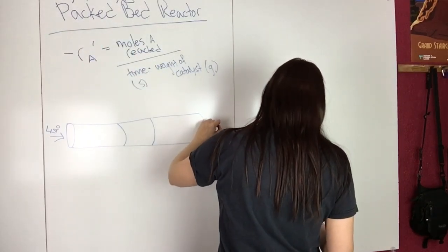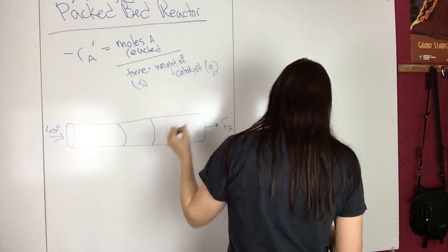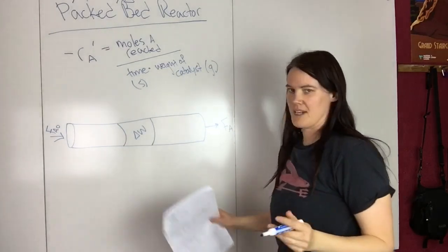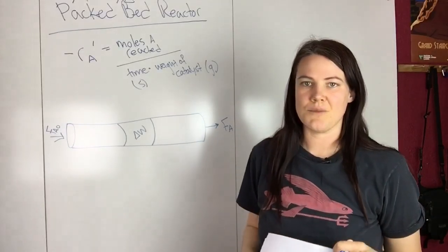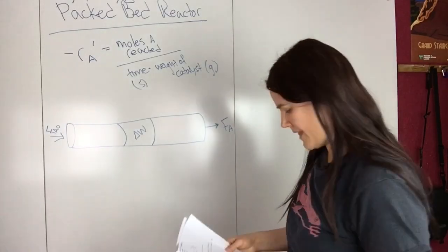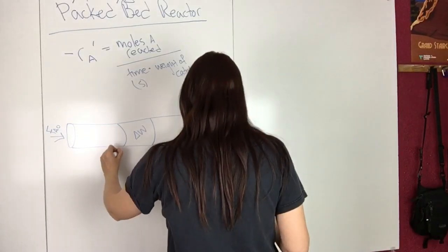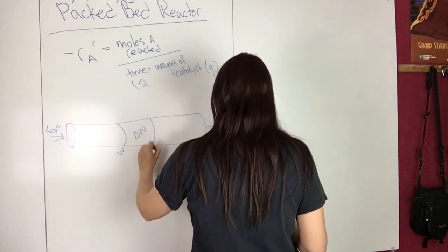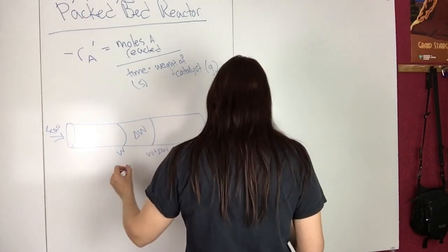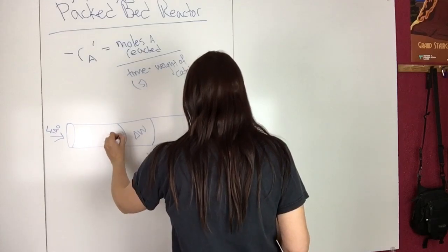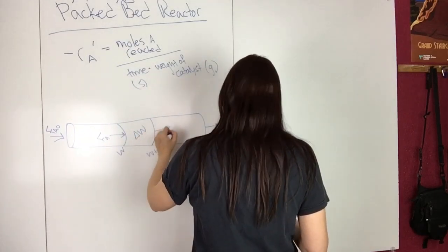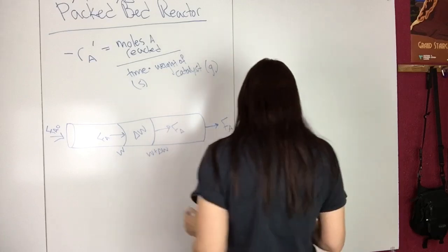You have a molar flow rate out, notice we're looking at weight, so we have a delta W instead of delta V, and so then we have some weight here, and over here we have the weight plus delta W, so then we have the F_A flowing in here, F_A out.